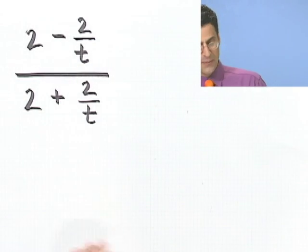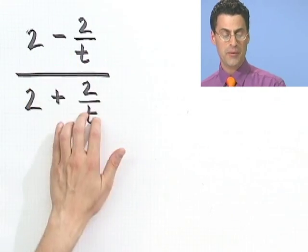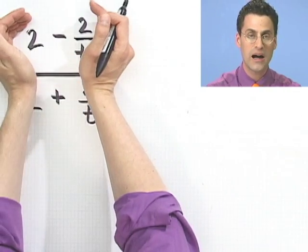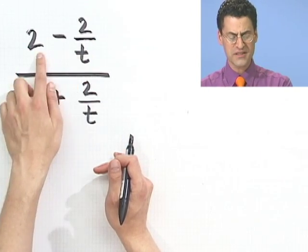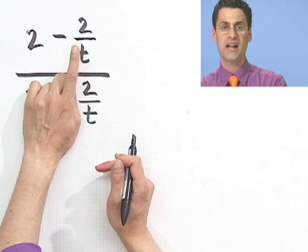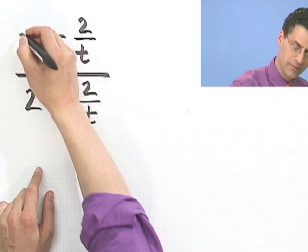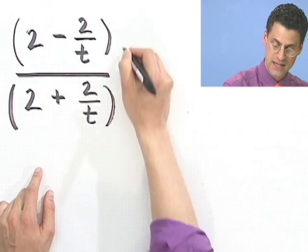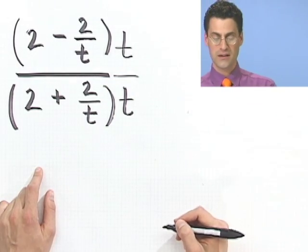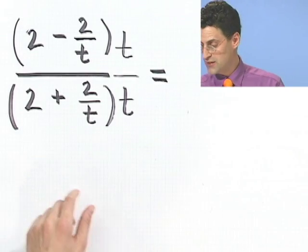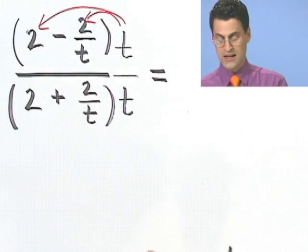Another way to do the same type of problem is to look at this and try to clear the denominators off the top and bottom by a very clever choice of multiplying top and bottom by the same thing — namely, by multiplying by 1. Notice that if I multiply this whole thing by t, that would clear the denominator, and the same t works on the bottom too. So if I just multiply top and bottom by t — that's t over t, which doesn't change the value of anything — I've got to distribute. Don't make a classic mistake: I've got to distribute that t everywhere.